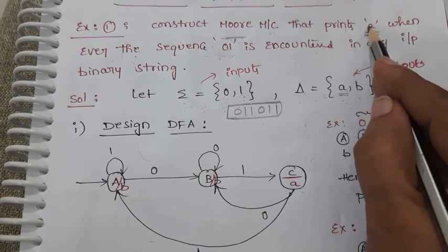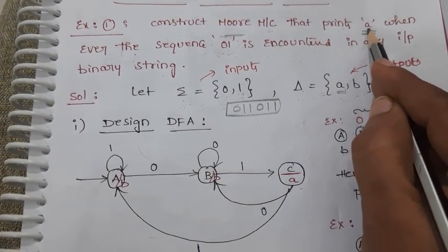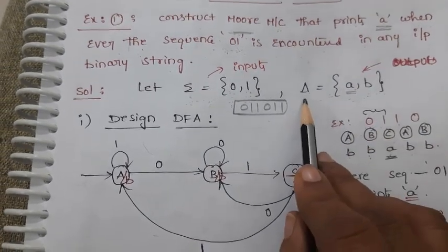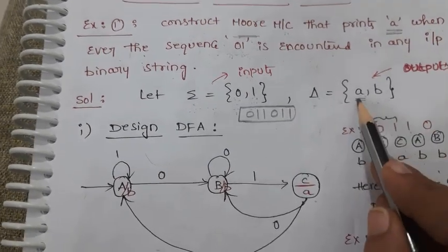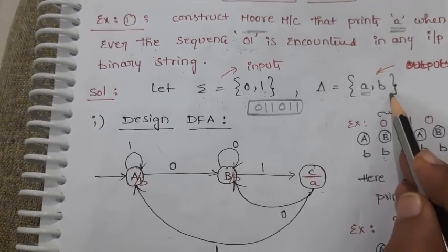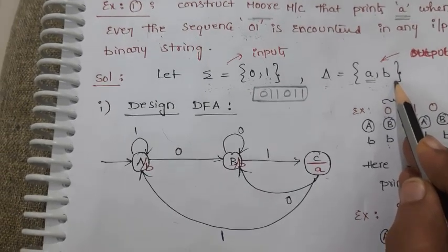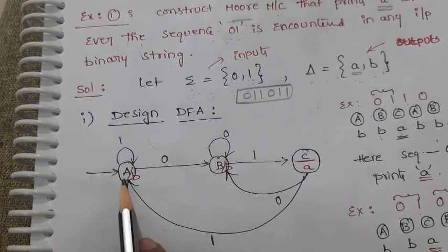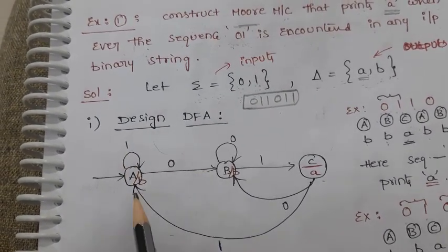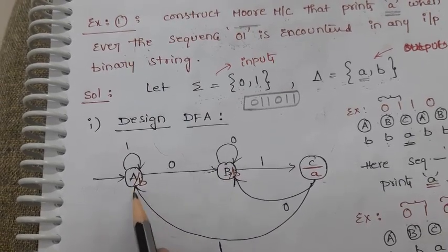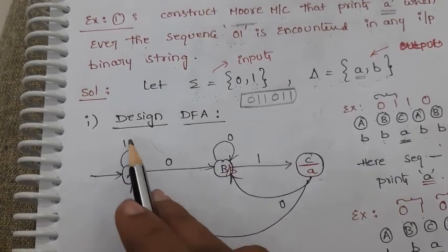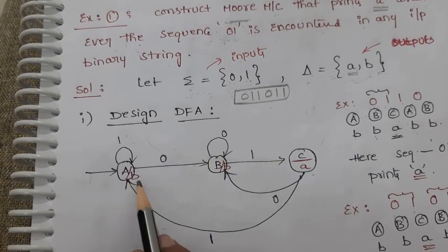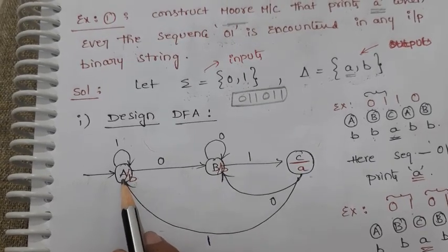The output set consists of A as one variable, and there may be another variable also. So the output set may be represented with two variables, A as well as B. In a Moore machine, the outputs are associated with the states only, unlike a Mealy machine where outputs are associated with transitions.